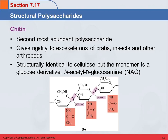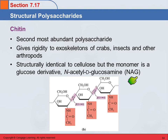Chitin is another structural polysaccharide found in the exoskeletons of crabs, insects, lobsters, shrimp, and other arthropods. It is identical to cellulose except that the glucose monomer units are actually amino sugar derivatives — specifically N-acetyl D-glucosamine, abbreviated NAG. So chitin and cellulose are very similar, but chitin has this extra N-acetyl amino group functionality on it.